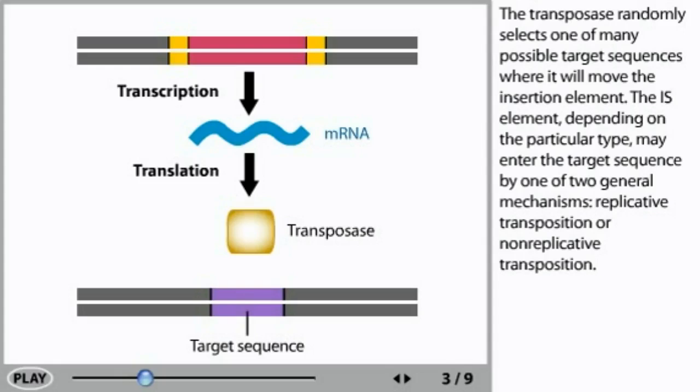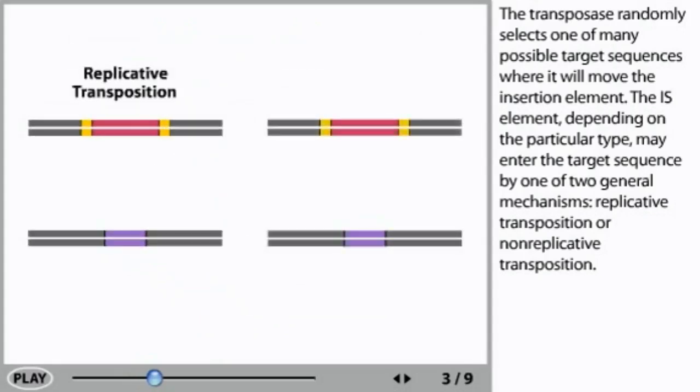The IS element, depending on the particular type, may enter the target sequence by one of two general mechanisms: replicative transposition or non-replicative transposition.